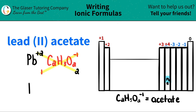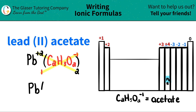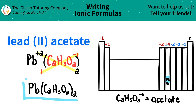I'm ready to write my formula. I got Pb — this is telling me I only need one of them, so I don't have to write the one. But here's the thing: if you have multiple polyatomics, which is what we have here — I have two acetates — I need to put parentheses around the whole polyatomic. So I'm going to put parentheses around C₂H₃O₂, close the parentheses, and write two. So lead two acetate is Pb(C₂H₃O₂)₂.